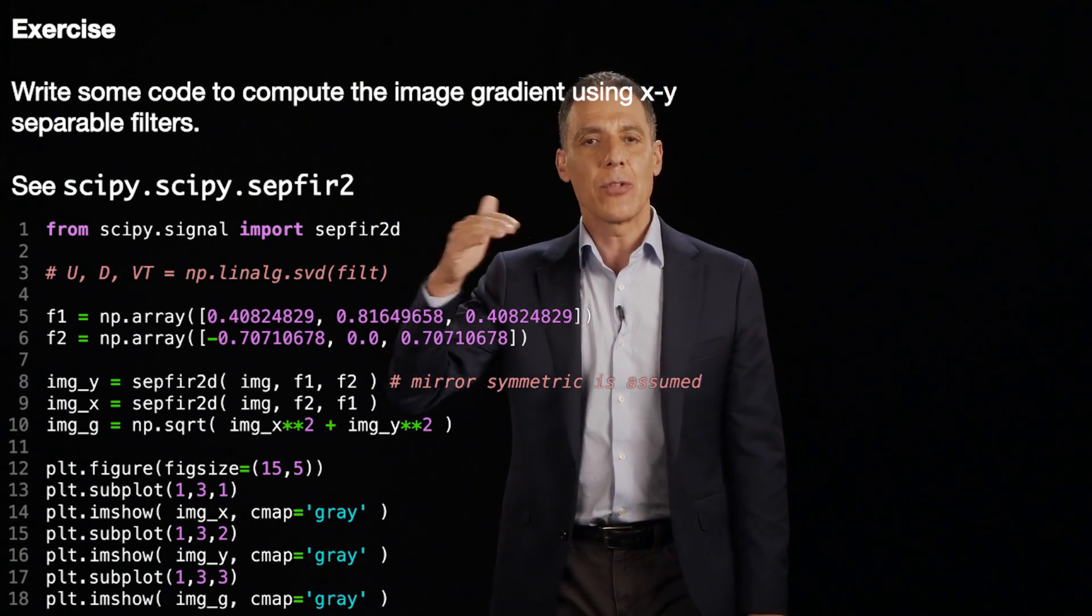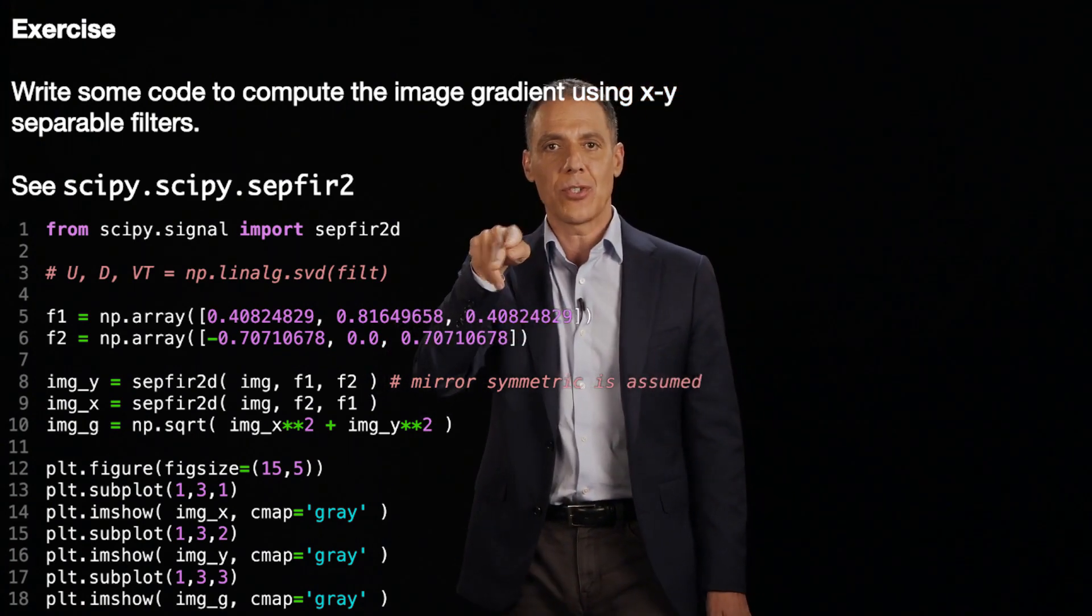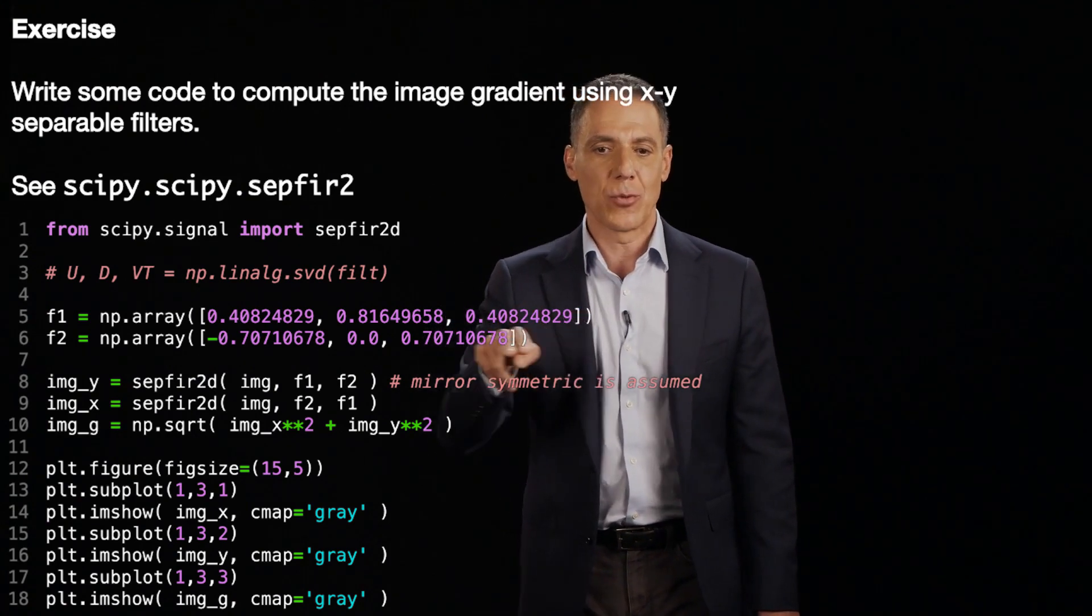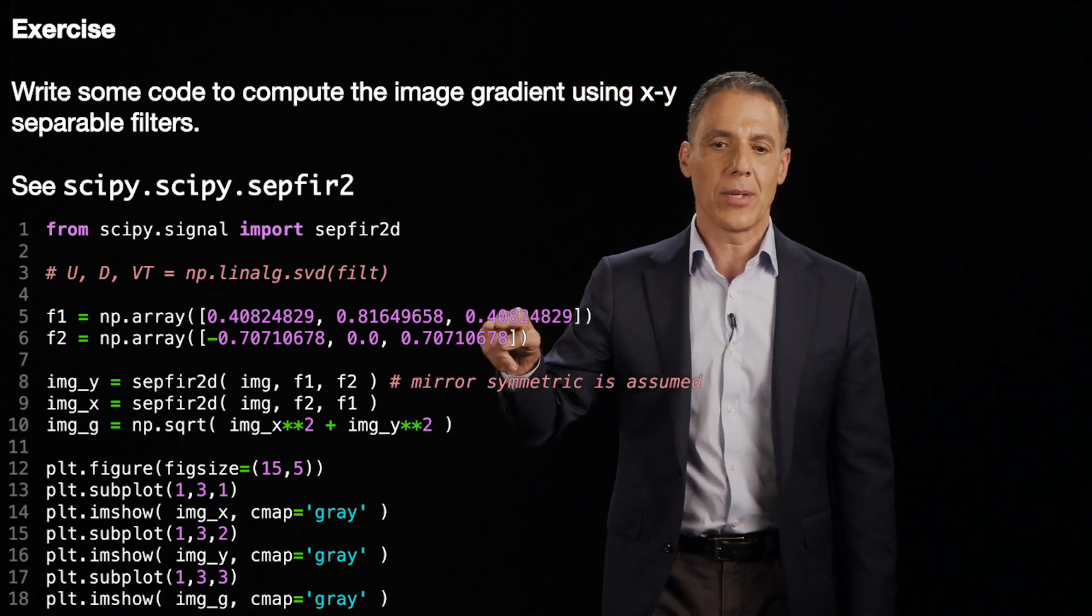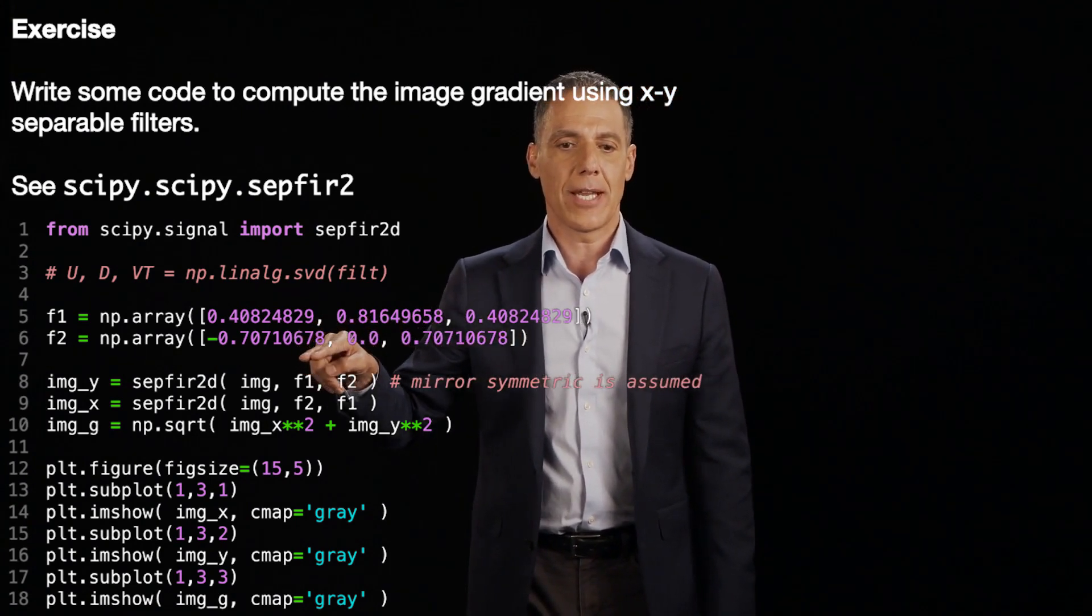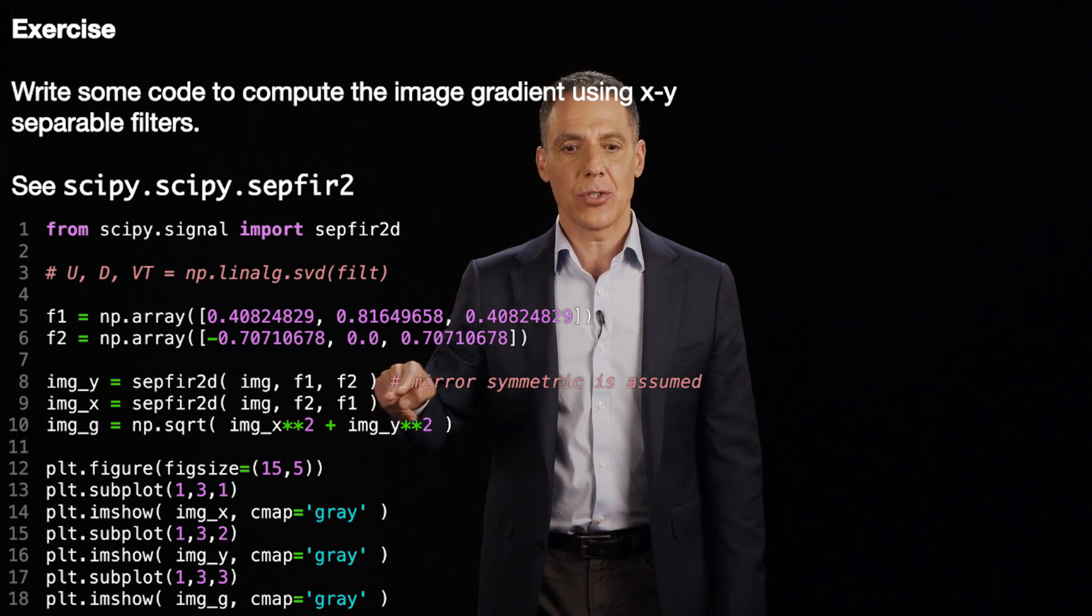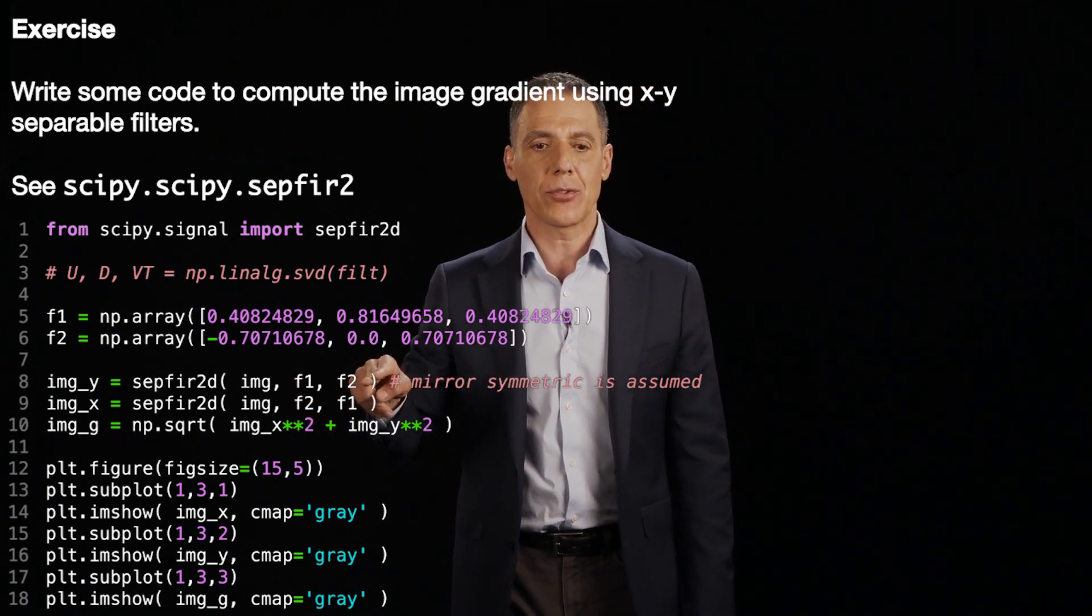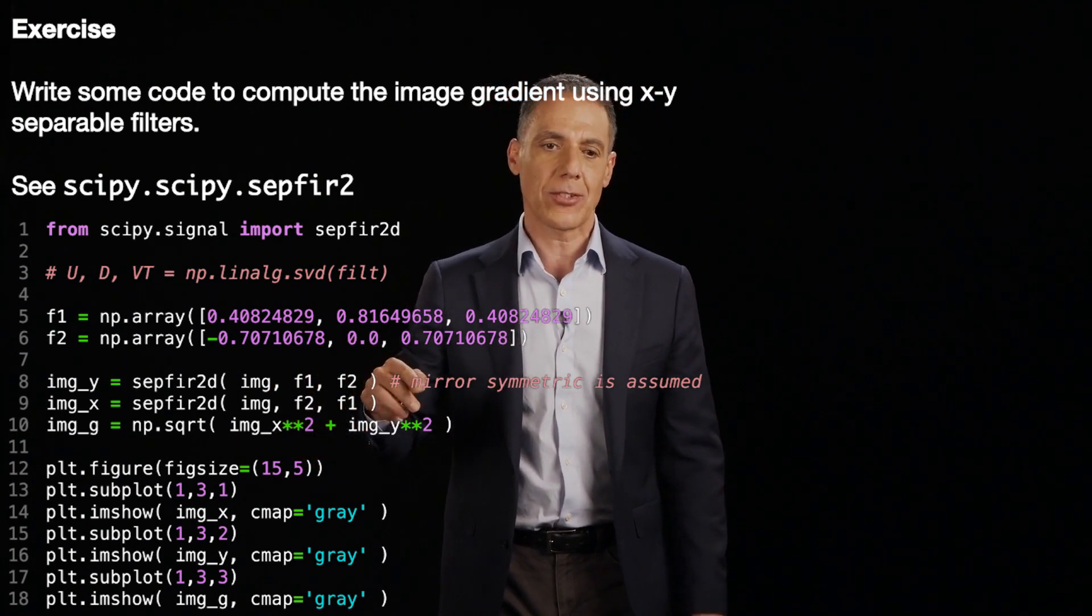And you will, if you just look at that, you will notice that the diagonal matrix has zero in two positions and non-zero. And I've just ripped out the values here instead of coding it. And I just looked at the values, I ripped them out, and there are my two filters, F1 and F2. I'm going to do two 1D convolutions, F1 in the horizontal direction, F2 in the vertical direction, and then F2 in the horizontal direction, F1 in the vertical direction.